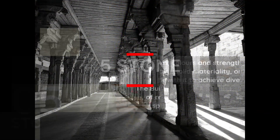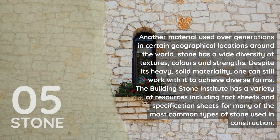Stone. Another material used over generations in certain geographical locations around the world, stone has a wide diversity of textures, colors, and strengths. Despite its heavy, solid materiality, one can still work with it to achieve diverse forms. The Building Stone Institute has a variety of resources including fact sheets and specification sheets for many of the most common types of stone used in construction.